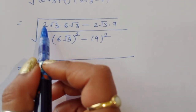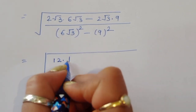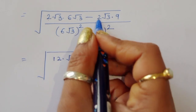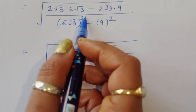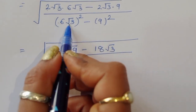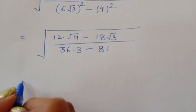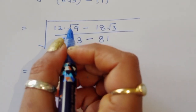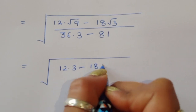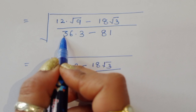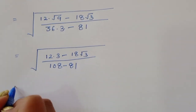In the numerator: 2 times 6 is 12, and square root of 3 times square root of 3 is 3, so 12 times 3 equals 36. Then minus 18 square root of 3. In the denominator: 6 squared times 3 equals 108, and 9 squared is 81. So we have 36 minus 18 square root of 3 divided by 108 minus 81.